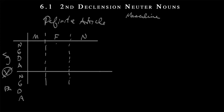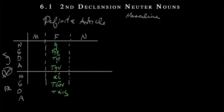Going back to chapter three, when we came in contact with the feminine article. We had hē, tēs, tē, tēn. Remember, when the genitive or dative is accented on the ultima, we get a circumflex. And then tēn — this was like our class A of first declension nouns. But then in the plural, we had hai, tōn, tais, and then tas. That's a long alpha — books won't show that, but you should know it. Long alpha, and then an acute accent.